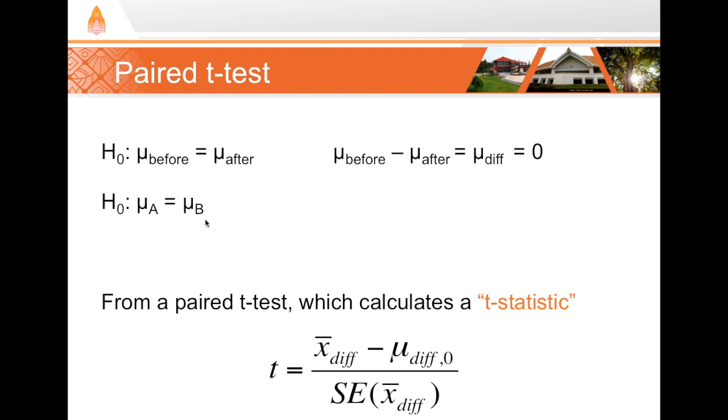If we look at the difference between the two, if we subtract before and after or method A and method B, we get the mean difference. The mean difference then we would assume in our null hypothesis is equal to zero.